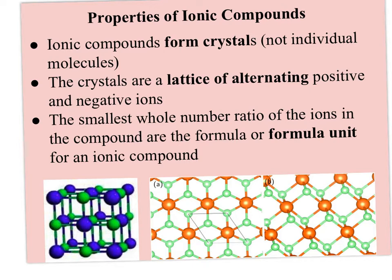In the previous video, I talked about that an ionic compound forms when there's a transfer of electrons. One atom is losing electrons, another atom is gaining electrons, and it benefits both atoms because they become more stable. They reach that '8 is great' or a stable octet.